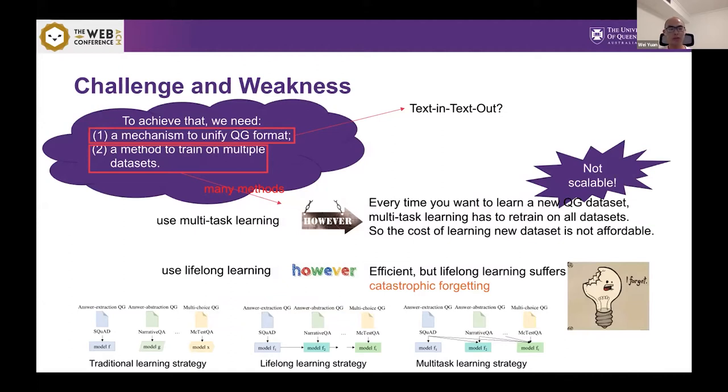To achieve the second goal, we have many methods. First, we can use multi-task learning. However, if you use multi-task learning, every time you want to learn a new QG dataset, you have to retrain on all datasets. So the cost of learning is very high. It's not affordable. The other method is use lifelong learning. Lifelong learning is efficient. However, it always suffers catastrophic forgetting.